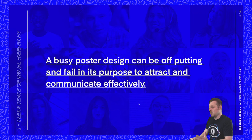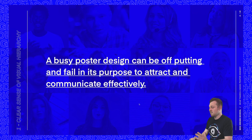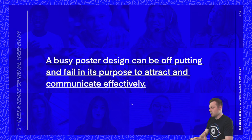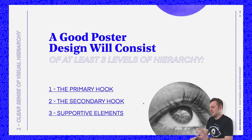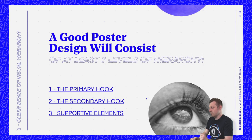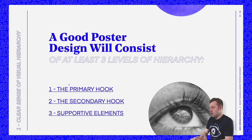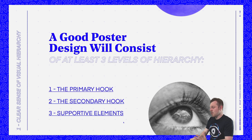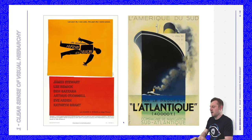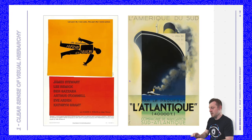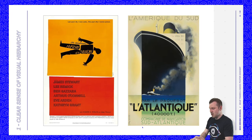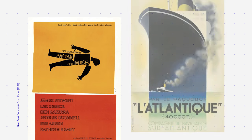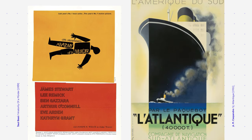A busy poster design can be off-putting and fail in its purpose to attract and communicate effectively. A good poster design will consist of at least three levels of hierarchy: the primary hook, the secondary hook, and supportive elements. Here are two good examples of posters that demonstrate a very clear hierarchy — a famous movie poster by Saul Bass and a well-known poster by A.M. Cassandre.